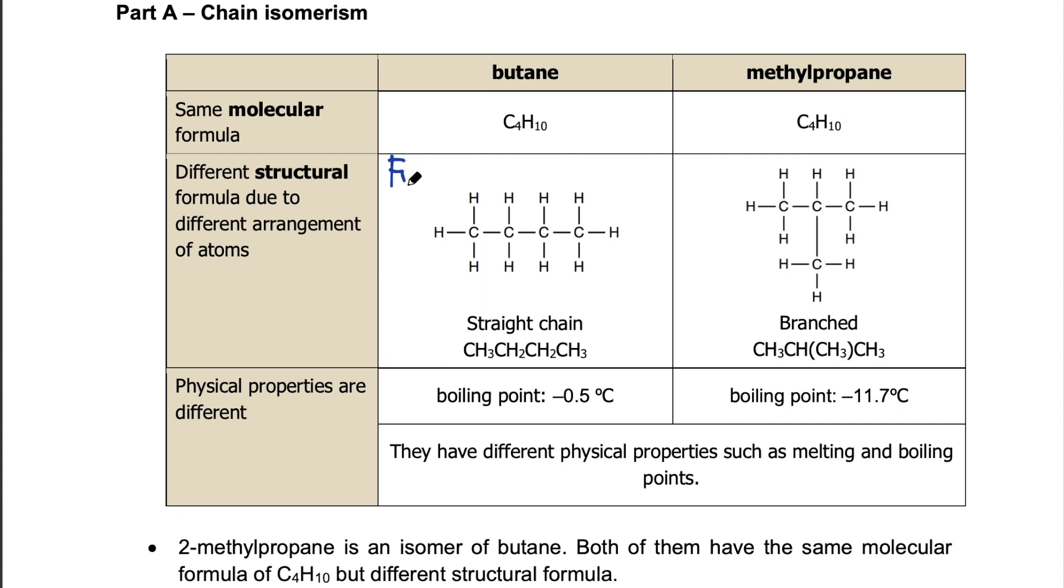So what I've drawn out here is called the full structural formula, in which all the bonds are being shown. What is written down here is what we call the written structural formula. And how is this done? It is written from left to right. So one carbon at a time, CH3, CH2, CH2, CH3. And same on the right. From left to right, CH3, CH and bracket CH3, followed by CH3. It's just written from left to right.